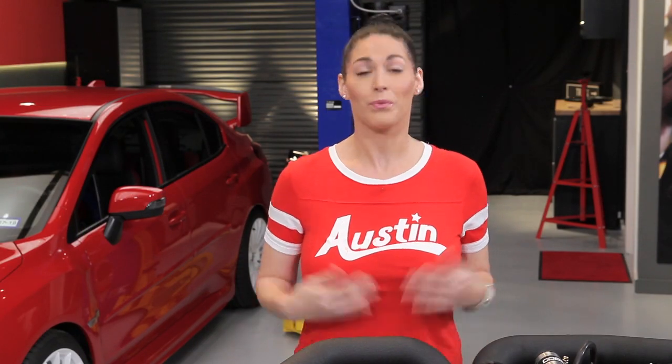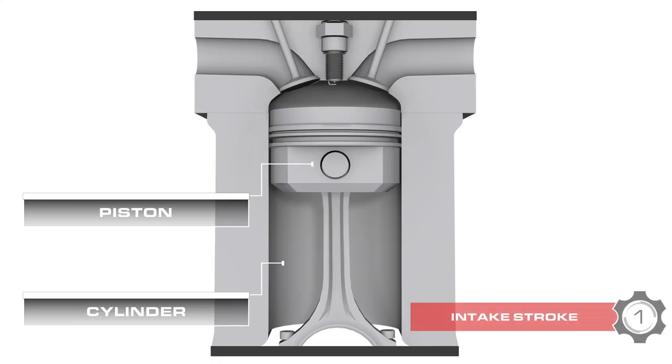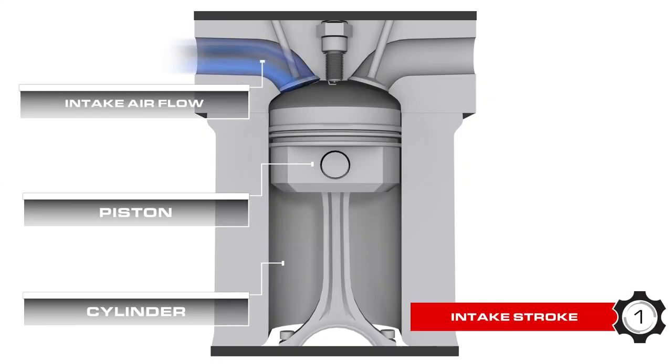Now that our engine — which at this point can be referred to as a long block — is assembled, we can go over each one of the strokes of the combustion cycle so that we can get a better understanding of how we make power. Keep in mind that we're using a simplified model because camshaft design can change the timing of valve events in relation to the combustion cycle. The first of the four strokes is the intake stroke.